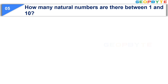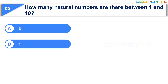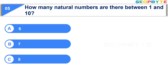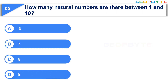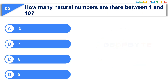Moving to the fifth question: How many natural numbers are there between 1 and 10? Option A: 6. Option B: 7. Option C: 8. Option D: 9. Your time starts now. Your time is up and the correct answer is Option C, 8.